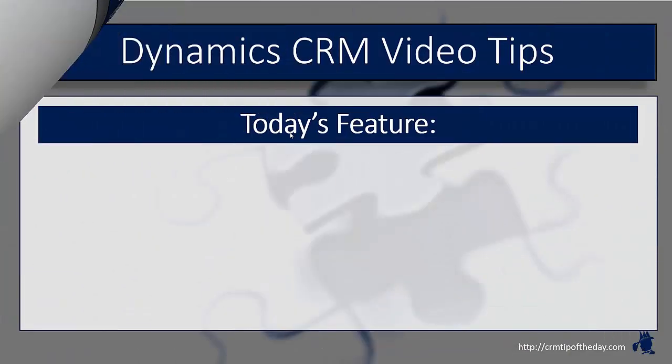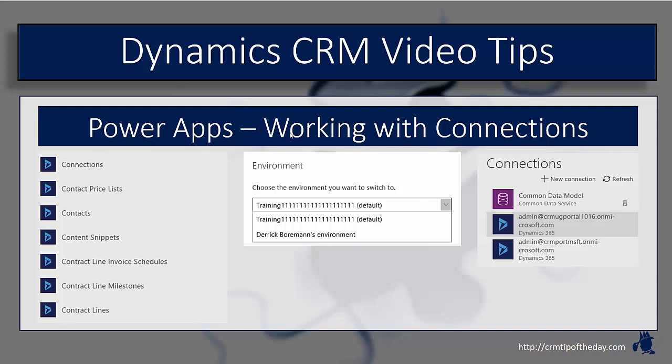This time I want to take a look at some of the different connection options with Power Apps. A lot's been made about the common data model and your ability to connect with different connections, whether it's Dynamics CRM or soon-to-be Dynamics 365, AX, and some of those different items. I want to talk about how the common data model is structured, what are some of your different connection options, and more importantly, how do you interact with some of that information once you're there.